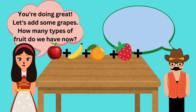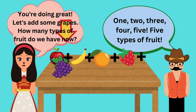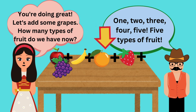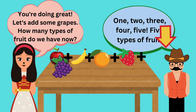You're doing great. Let's add some grapes. How many types of fruit do we have now? One, two, three, four, five. Five types of fruit. Yeah!